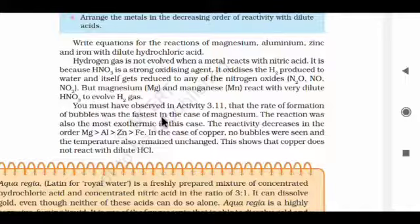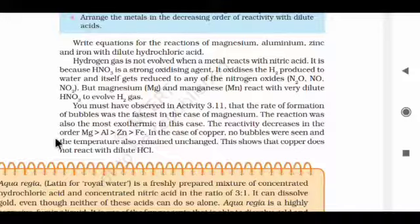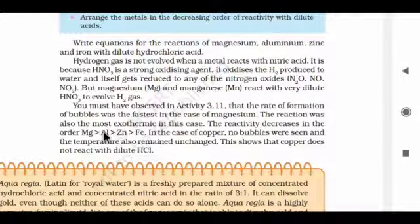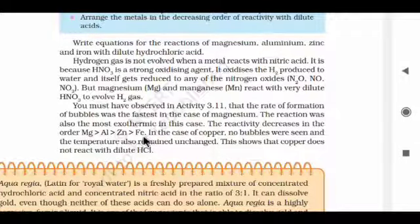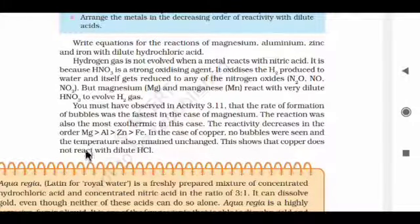In Activity 3.11, the rate of formation of bubbles was fastest in the case of magnesium, and the reaction was also the most exothermic. The reactivity decreases in the order: magnesium, aluminium, zinc, iron. Magnesium is the most reactive, followed by aluminium, then zinc, then iron. In the case of copper, no bubbles were seen and the temperature remained unchanged — showing that copper does not react with dilute hydrochloric acid.